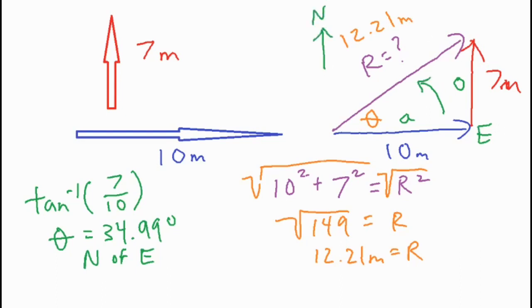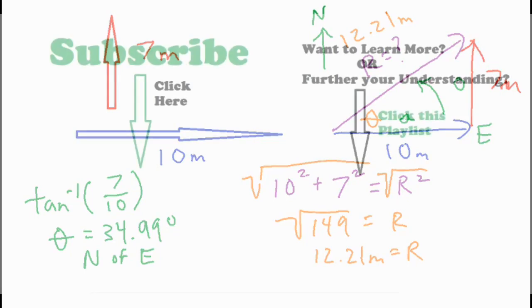Then you have 34.99 degrees north of east. So you might need to use that notation or add that detail to your angle as well. I hope that was helpful in helping you understand how to combine a horizontal and vertical vector in order to find the resultant and the angle. Thank you.